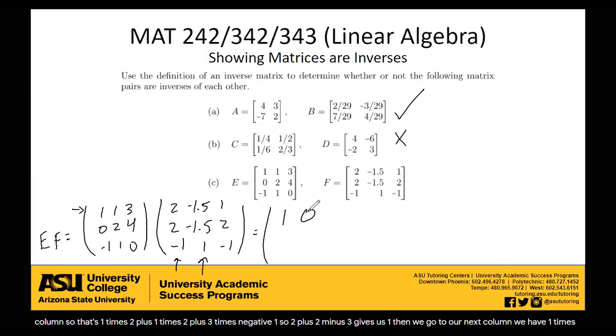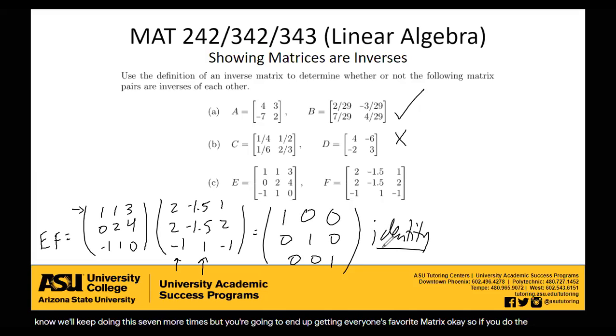And I'll save you the heartache. We'll keep doing this seven more times. But you're going to end up getting everyone's favorite matrix, the identity. If you do the multiplication out, you'll end up getting this guy, the identity. And since we showed that it works for E times F, and because these are both square matrices, it also gives us the identity if we do F times E. Therefore, we know that yes, in fact, these are inverses of each other.